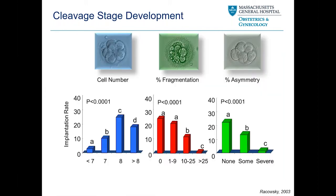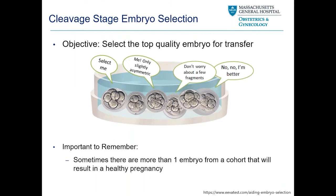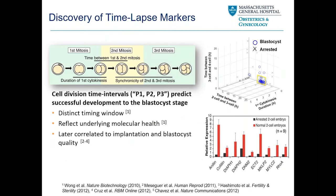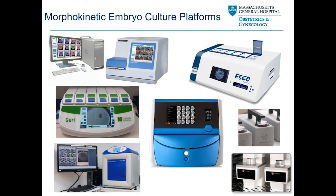On day three, we do embryo assessments — classically looking at cell number, degree of fragmentation, and asymmetry scores. However, day three embryo scoring has a really low positive predictive value for predicting which embryo will develop to blastocyst stage or result in a healthy pregnancy. In 2010, a beautiful paper published in Nature examined time-lapse imaging and found the first two divisions are highly linked to embryo development. Based on this work, many companies popped up offering time-lapse imaging systems to capture morphokinetic patterns, and numerous algorithms have been derived to help identify the best quality embryos.